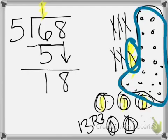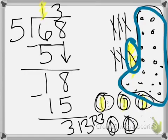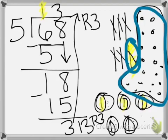Now they need to divide up the 18 ones equally into those 5 groups. How many did they get equal in each group? They got 3. So they put 3. How many did they end up using? They used 15 total, and there were 3 left over. And that ends up being your remainder 3.